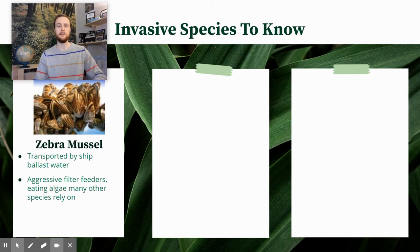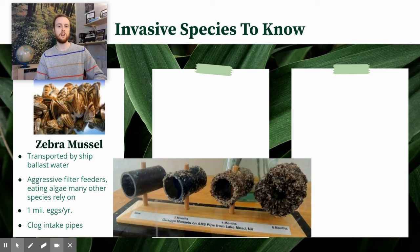This is a problem because zebra mussels out-compete other organisms relying on the same food source. Because they are so aggressive in their feeding, they get a leg up on other organisms in the ecosystem that rely on algae or sediments. They can also lay up to a million eggs a year, making them extremely rapid reproducers with very high biotic potential, enabling them to proliferate like wildfire. They can even clog intake pipes in a matter of months, reproducing so rapidly and attaching to basically anything, causing significant economic damages.